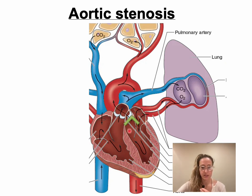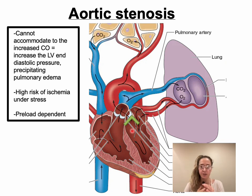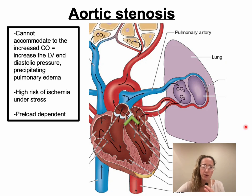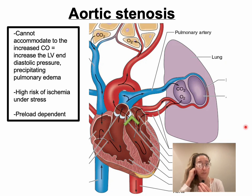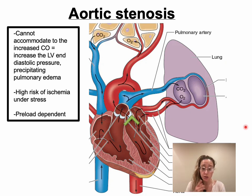Aortic stenosis is typically from a congenital bicuspid aortic valve and is diagnosed by hearing a harsh systolic murmur that radiates into the carotids. Aortic stenosis is generally well tolerated in pregnancy as long as it's mild to moderate, but if severe, the patient will most likely tolerate it very poorly. The heart cannot accommodate the increased cardiac output, which increases left ventricular end-diastolic pressure and can cause pulmonary edema, similar to mitral valve stenosis.